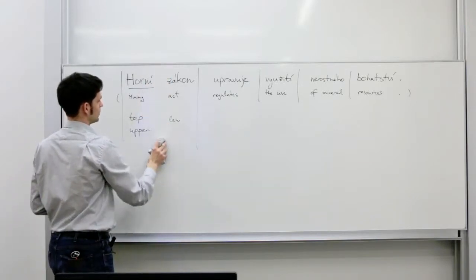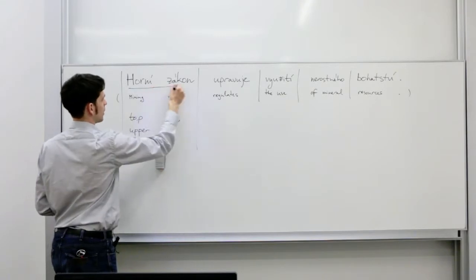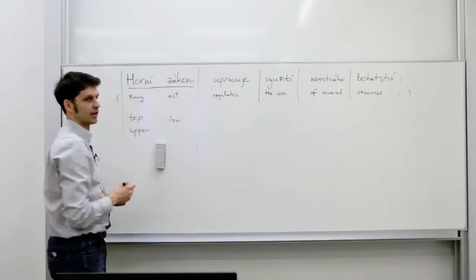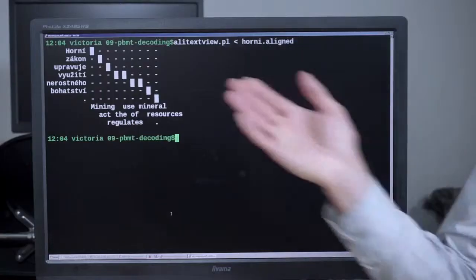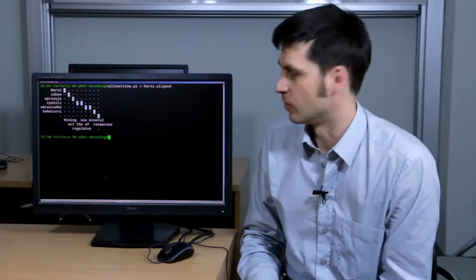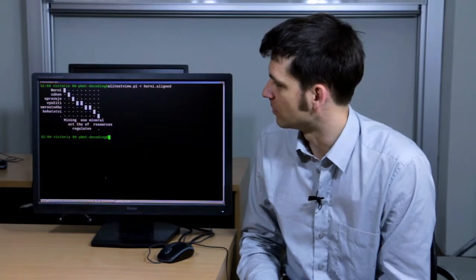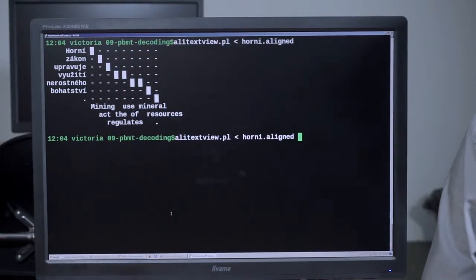Or in other words, it needs to see this whole phrase, horní zákon, in the training data. If this sentence happened to occur in our training data, we have it word aligned. And the phrase-based model can extract all segments from it, long and short, that correspond to each other across languages.